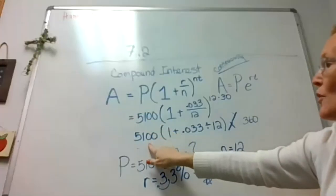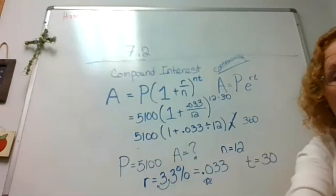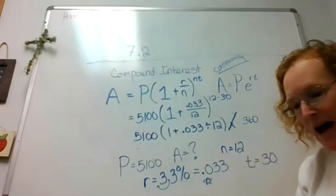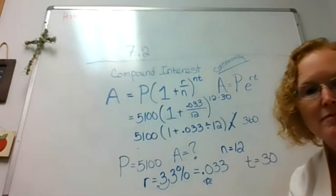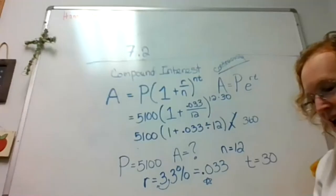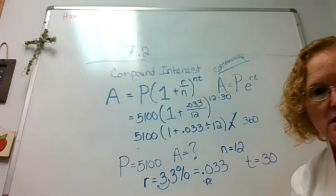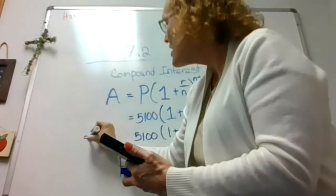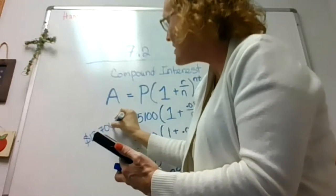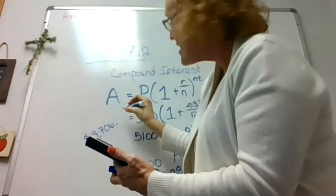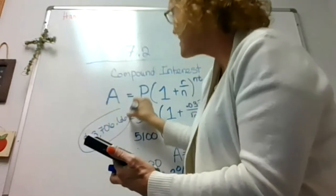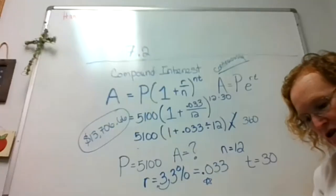Oh — I know what happened. We didn't multiply by 5,100 at the beginning. So take that number and now multiply by 5,100. Since you're dealing with money, we're going to round to two decimal places — dollars and cents. So your answer should be $13,706.66.